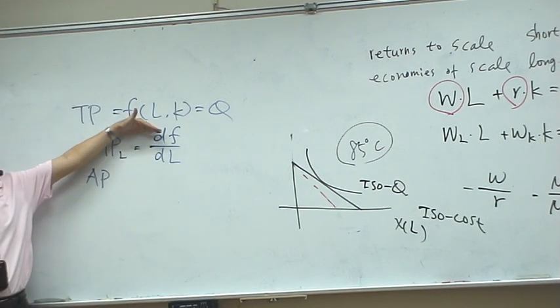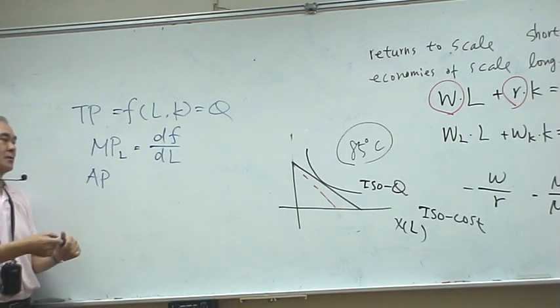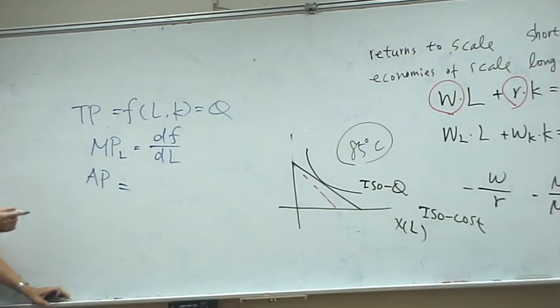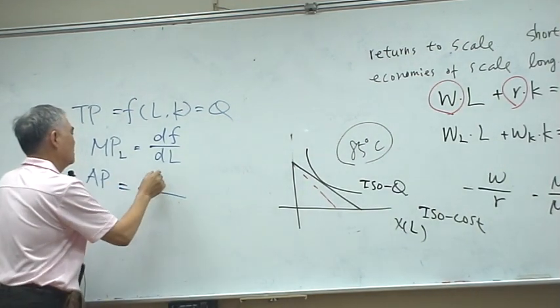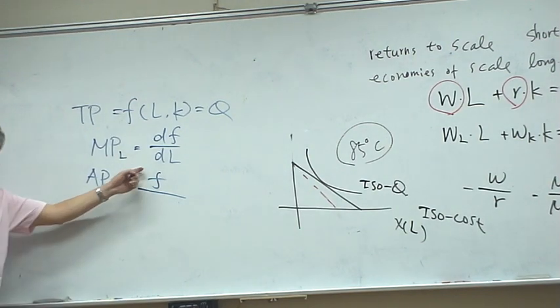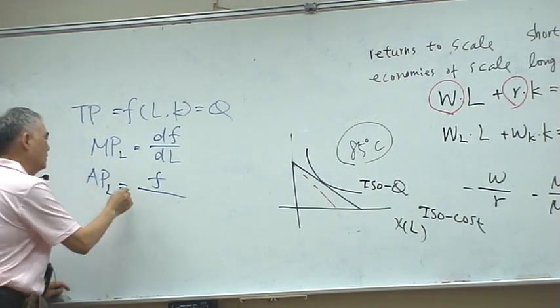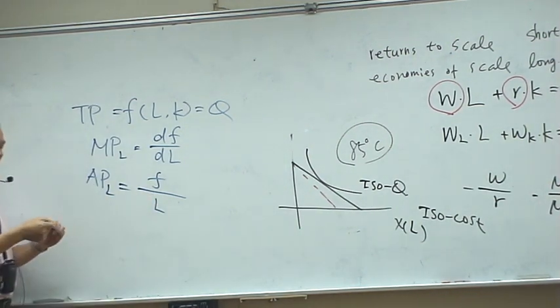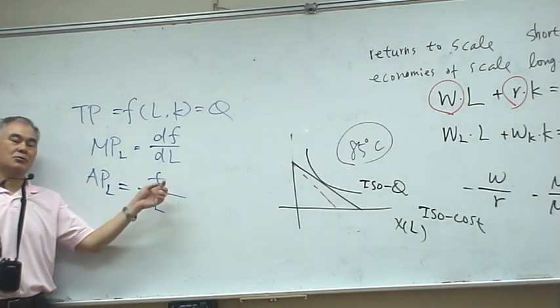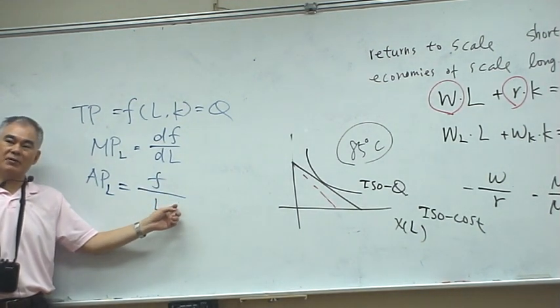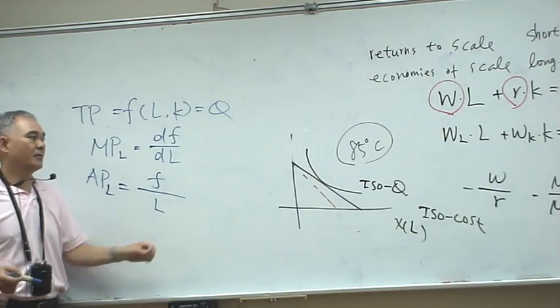So it is production, labor, production, labor. And here, it is average product. So this is the production you have, and this is the amount of labor you have. So it is the production of each unit of labor.